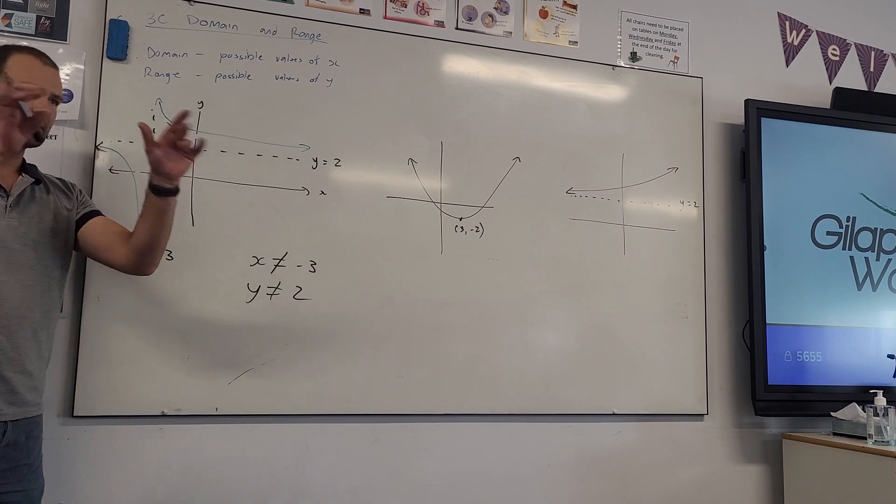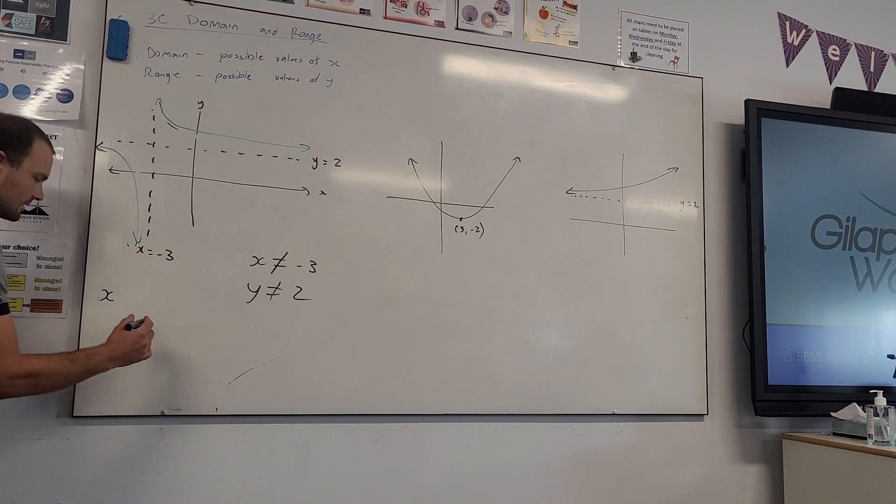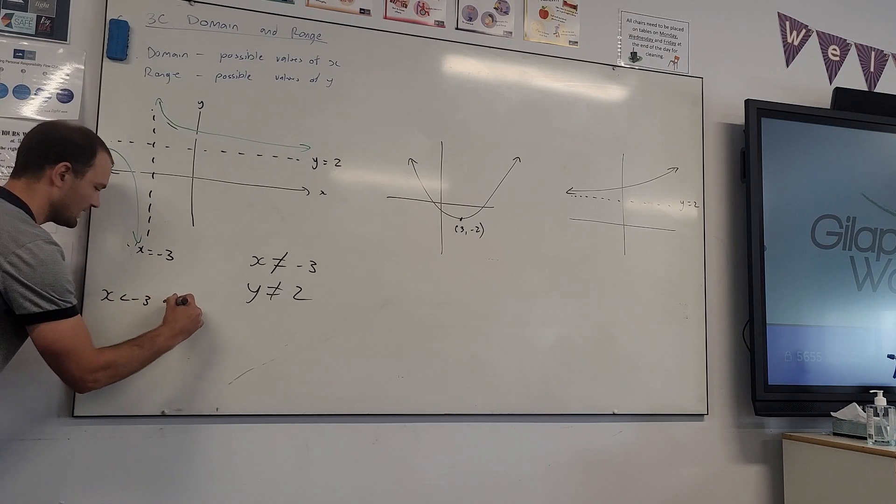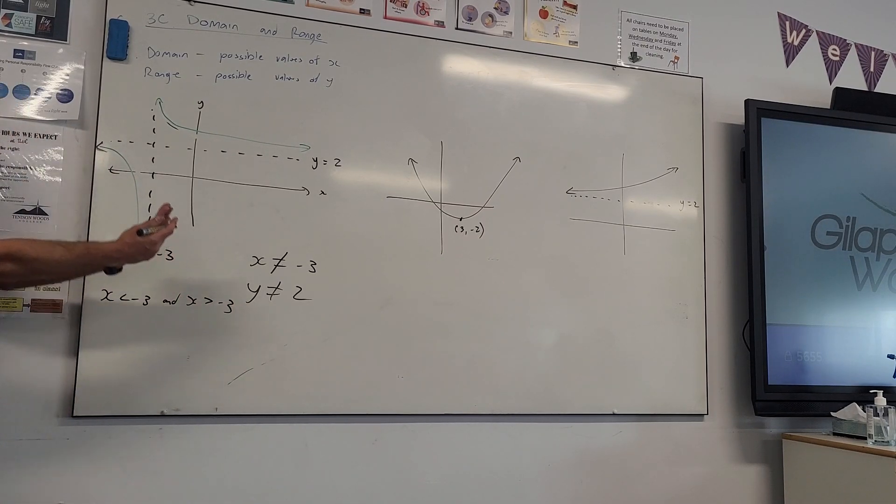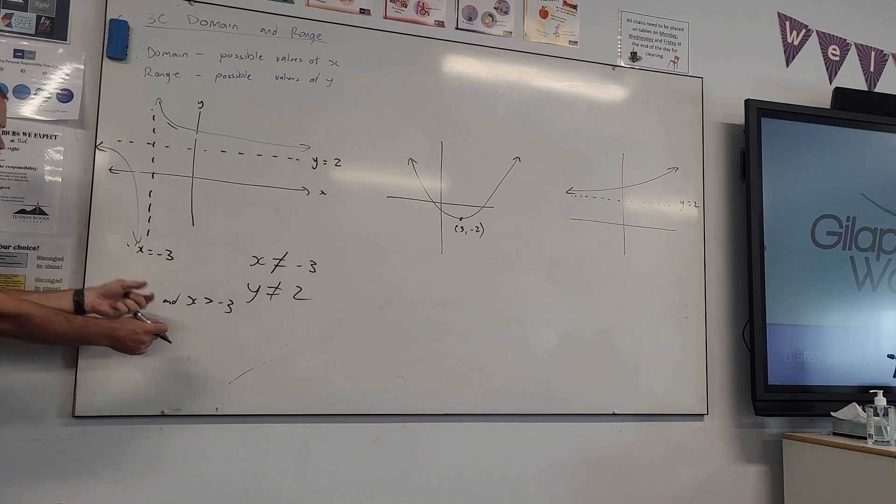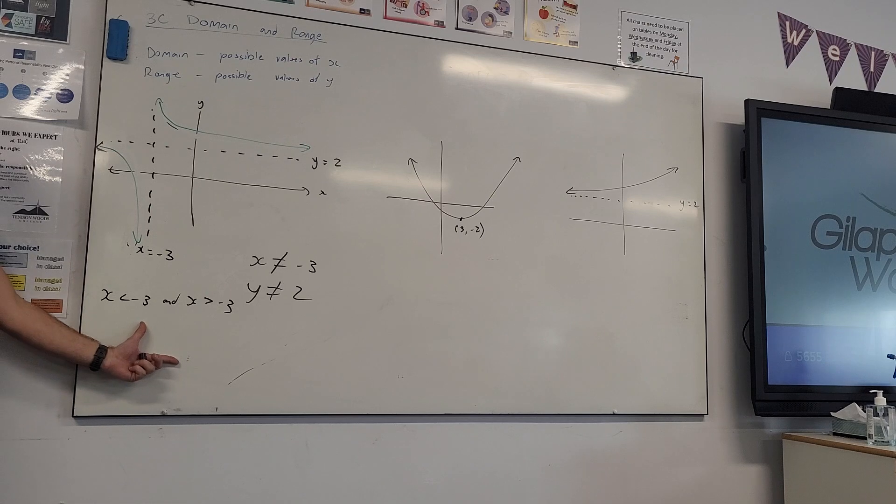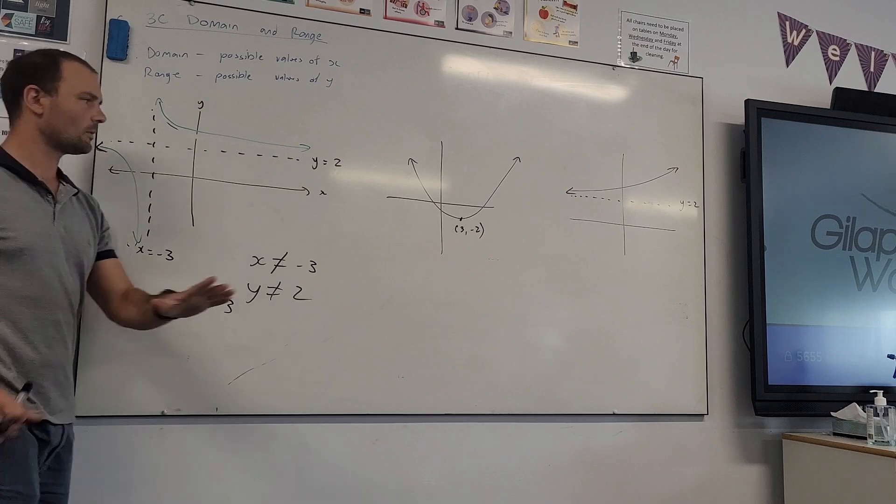Now, some people I've seen were having a go at it and they've written a statement like this, x is less than minus 3 and x is greater than minus 3 and whilst it's technically correct, it's true, x exists for all values less than minus 3 and for all values greater than 3, that's a correct statement, the way we write it is like this, x does not equal minus 3. Okay, move on to the next one.